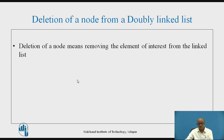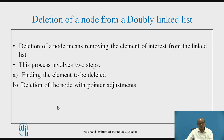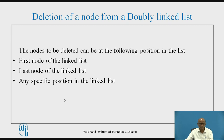Deletion of a node means removing an element from the linked list. This process involves two steps: the first step is finding the element to be deleted, and the second step is deleting the node with pointer adjustments. The node to be deleted can be at the following positions: the first node, the last node, or a specific location. In this video, we will focus on the node placed in the first position.